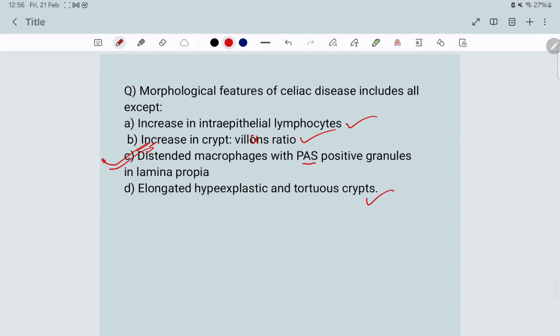In this question, morphological features of celiac disease includes all except - the answer is C. Why is it C? Because PAS positive granules in lamina propria is of Whipple's disease.